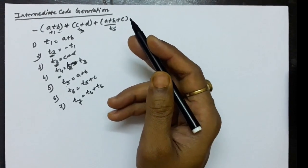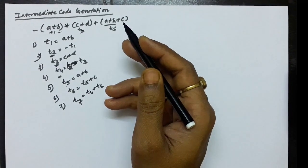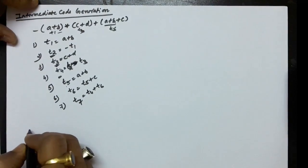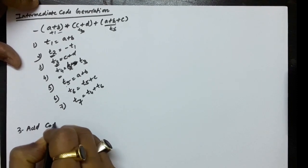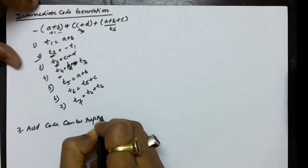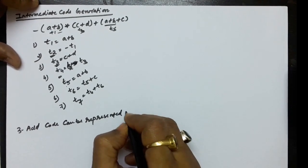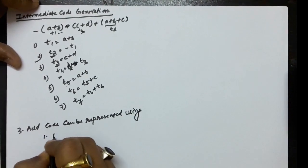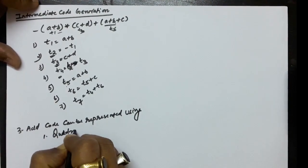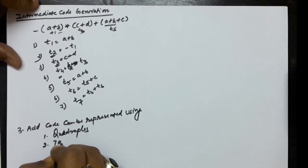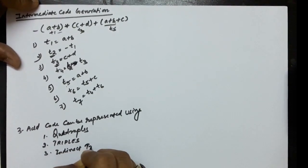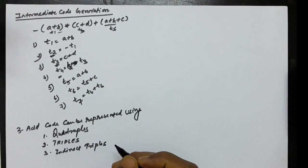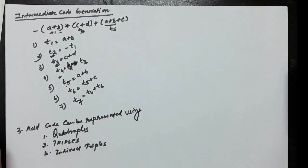These three-address codes can be represented in various forms. There are three different ways: one is the quadruple, the second is triples, and the third is indirect triple. We are going to see all these things one by one.